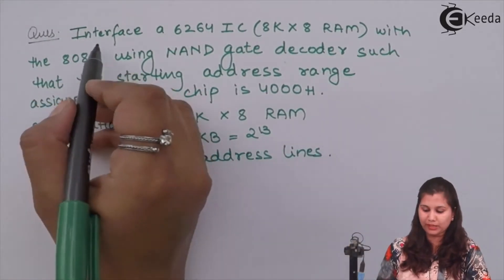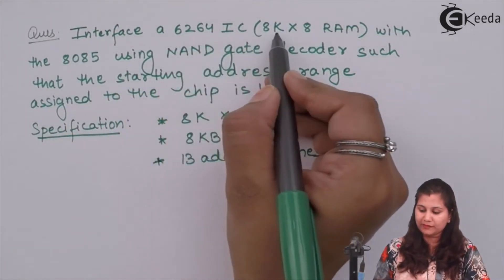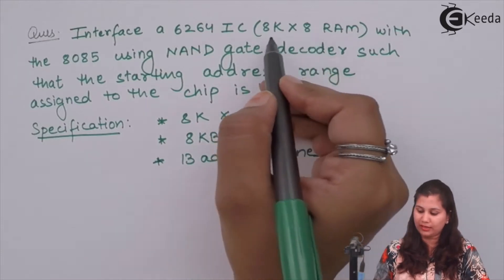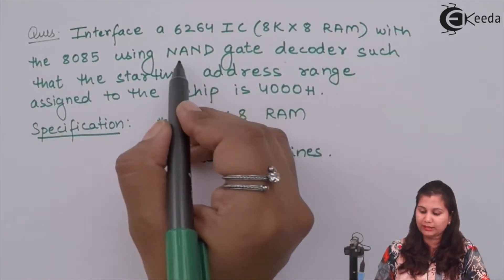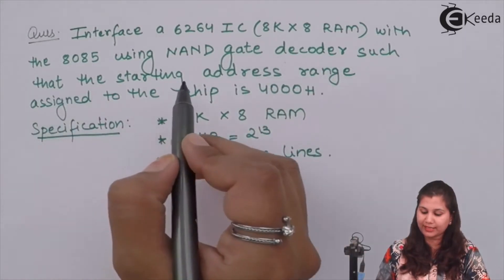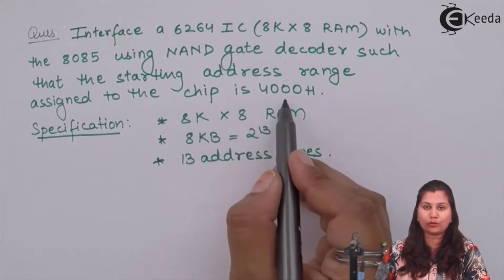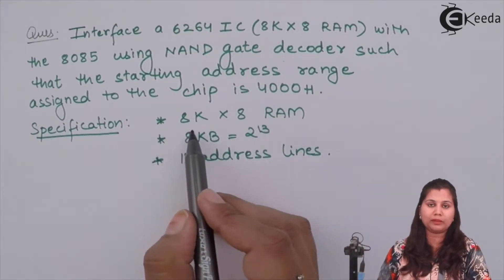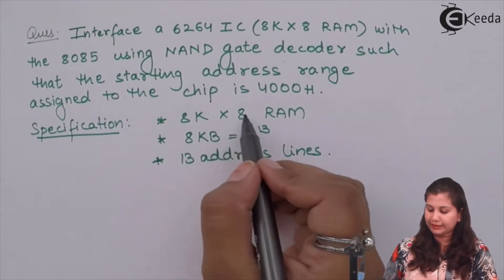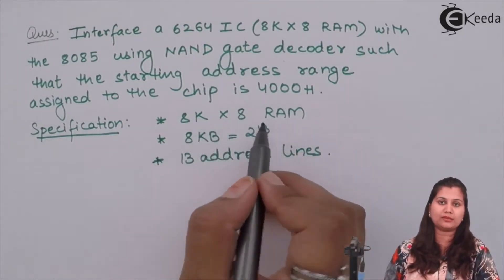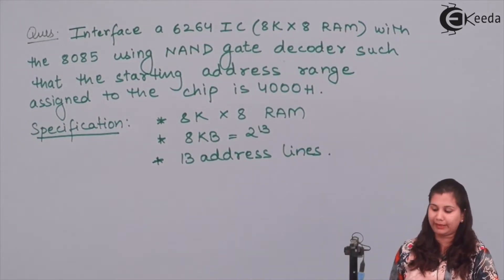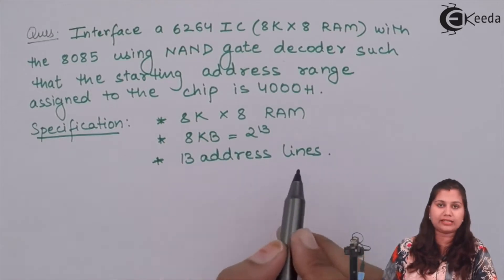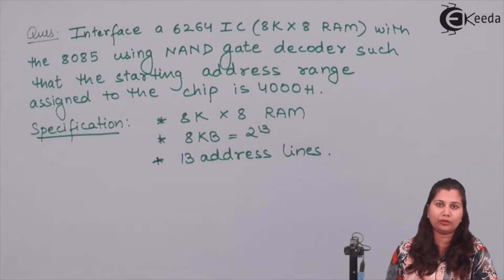Our question is: we have to interface an IC6264 whose size is given as an 8 kilobyte memory chip with 8-bit registers, interfaced with the 8085. We have to use a NAND gate decoder such that the starting address range assigned to the chip is 4000H. 8 kilobytes equals 2 raised to the power 13, meaning 13 address lines are used to address these memory locations.